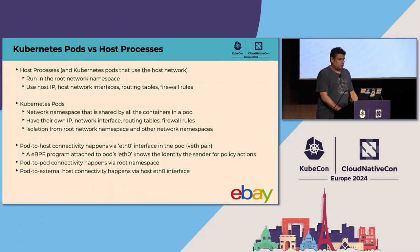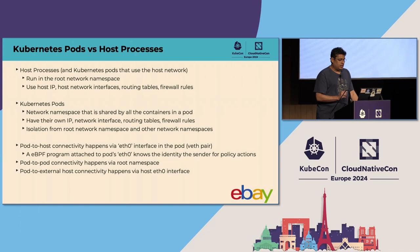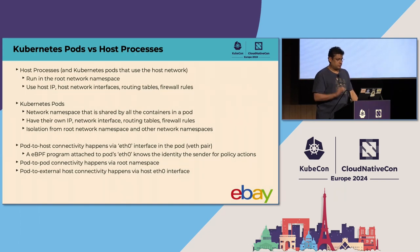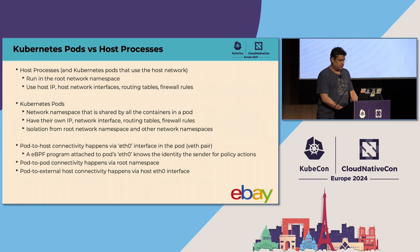Each Kubernetes pod acts like its own virtual machine as far as networking behavior is concerned. Pod-to-host communication happens via the eth0 interface in the pod, pod-to-pod communication typically transits the root network namespace, and pod-to-external communication transits the eth0 interface in the root namespace.